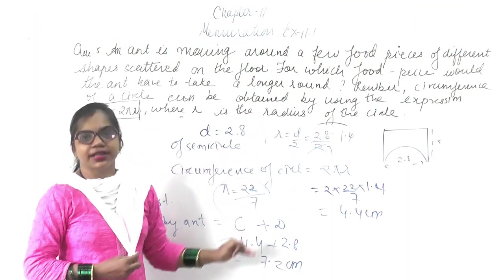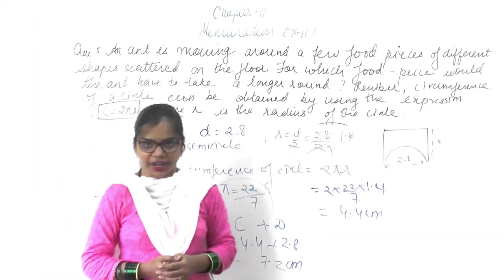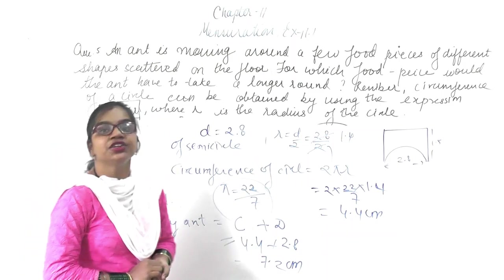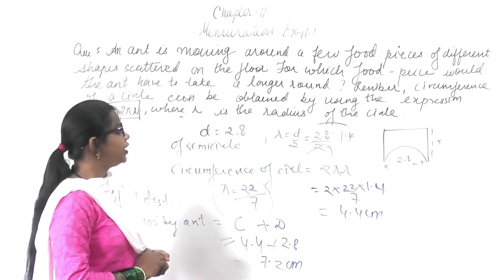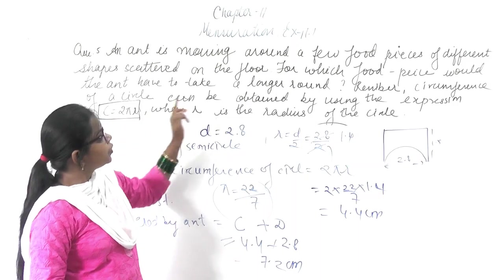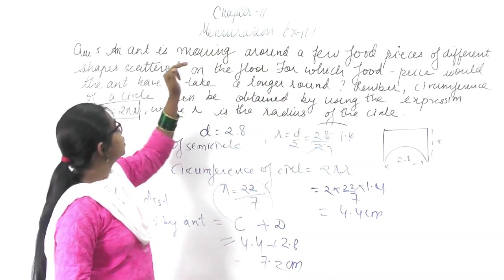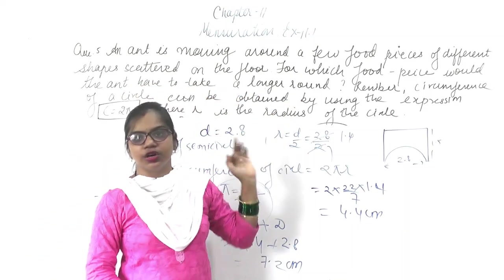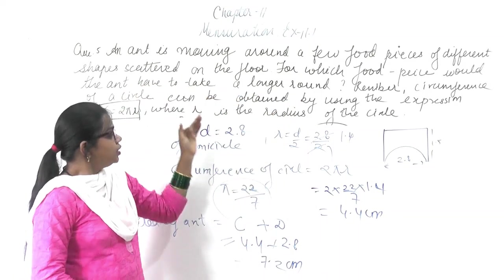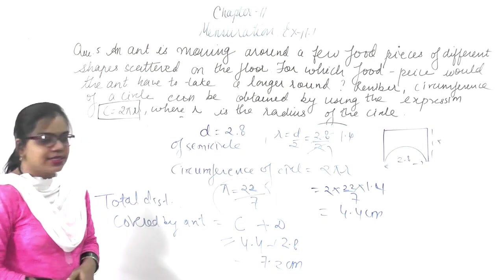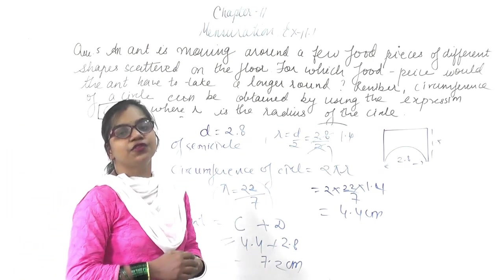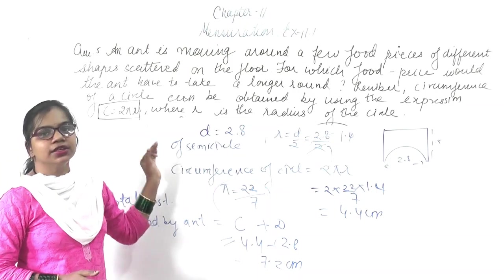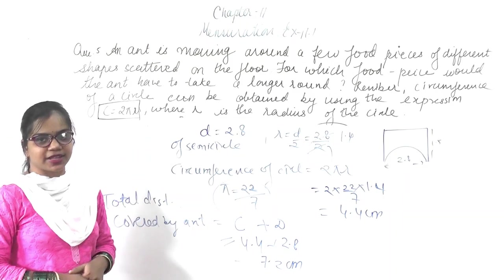In this third part you will find the circumference of the circle and the total, and looking at all of this you have to find out for which food piece the animal has taken the longer round. This is a new and easy chapter. Learn the formula by heart and keep following the portion. Thank you.